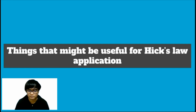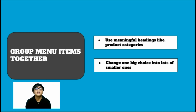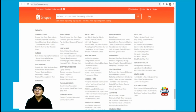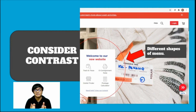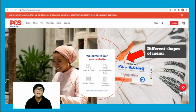Here are some useful tips for applying Hick's Law. First, group menu items together using meaningful headings like product categories — turn one massive choice into lots of smaller ones to shorten decision times. Next, consider contrast: using contrasting color, shape, size, and texture helps indicate choices more clearly. Applying these to your web design will help reduce users' decision-making time.